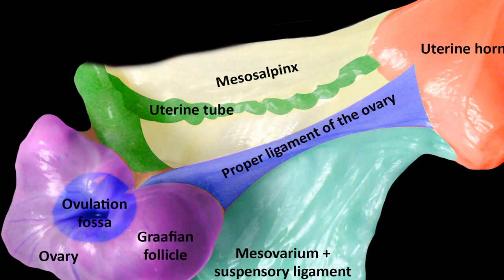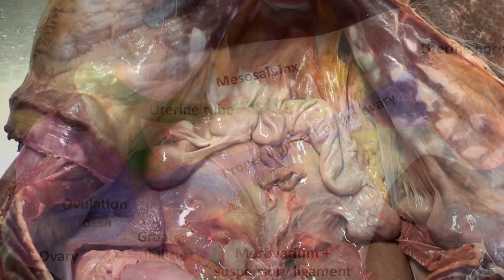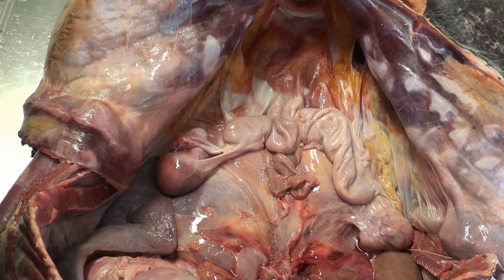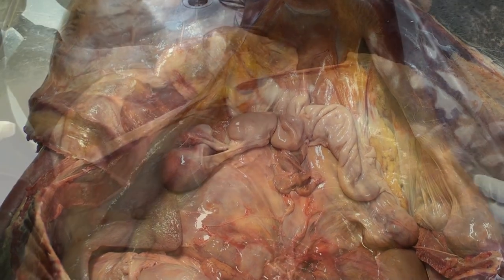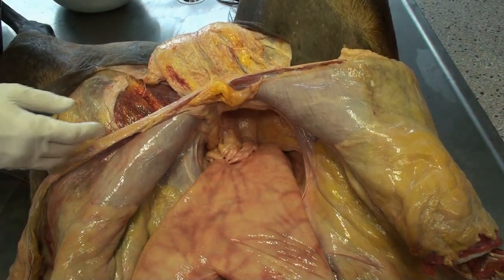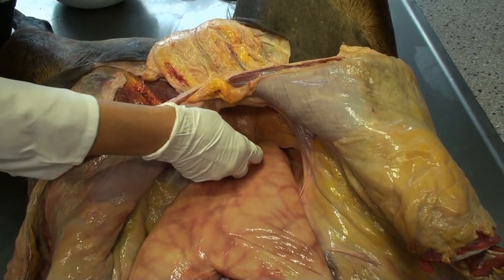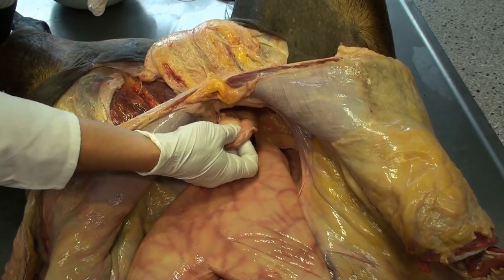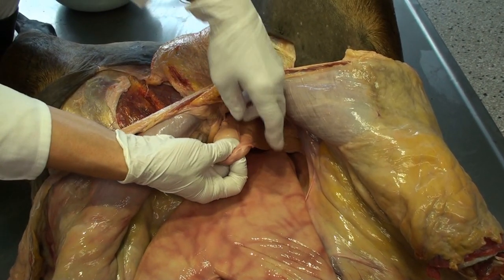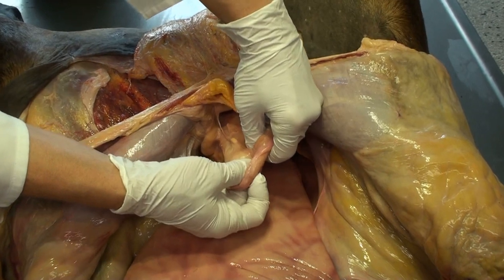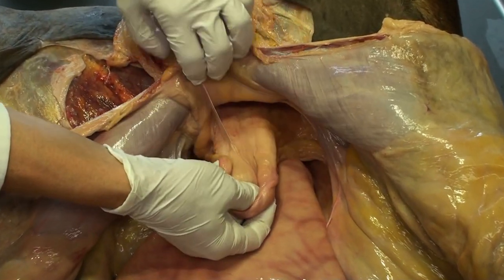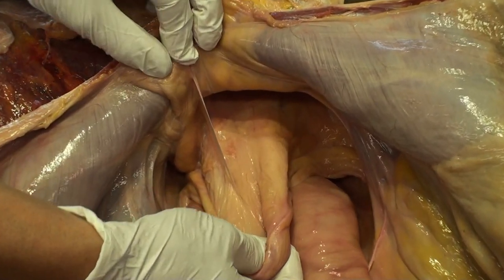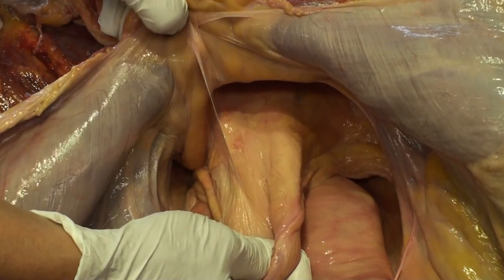We talked also about the mesosalpinx and the anatomy of the uterus and cervix. In this tutorial we will talk about the anatomy of the female reproductive system in a pregnant mare.